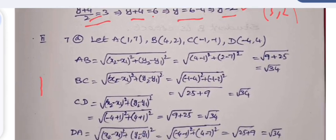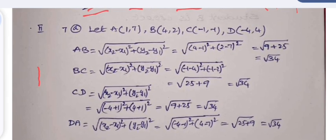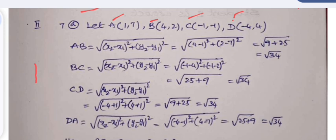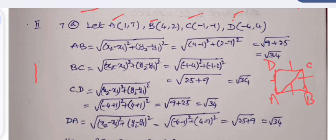Section 2, question 7a: The four points are named A, B, C, D in order as given. The order must not be changed. To prove a quadrilateral is a square, all four sides must be equal and both diagonals must also be equal. The distances AB, BC, CD, and DA are all calculated using the distance formula.